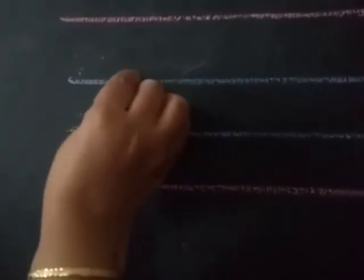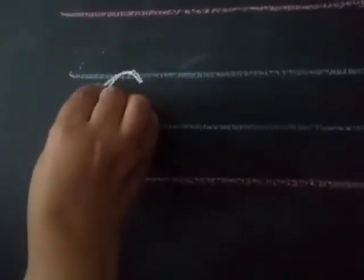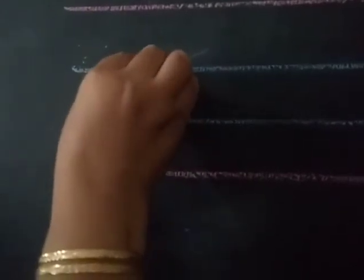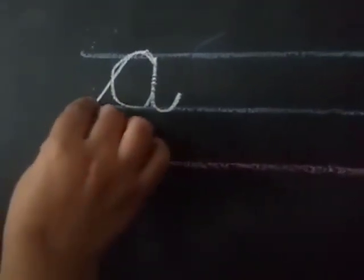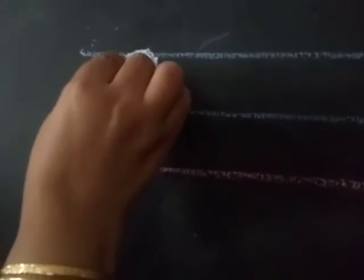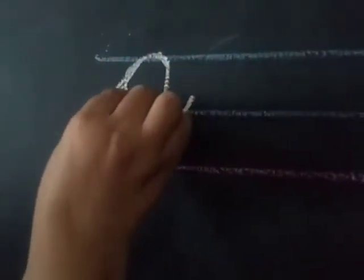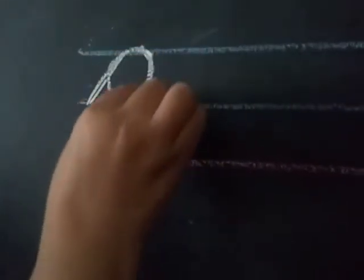Now, we are going to write small a. How to write? Let us write. Draw a small curve, line, and a small curve. Okay. Draw a small curve, line, and a small curve. A.